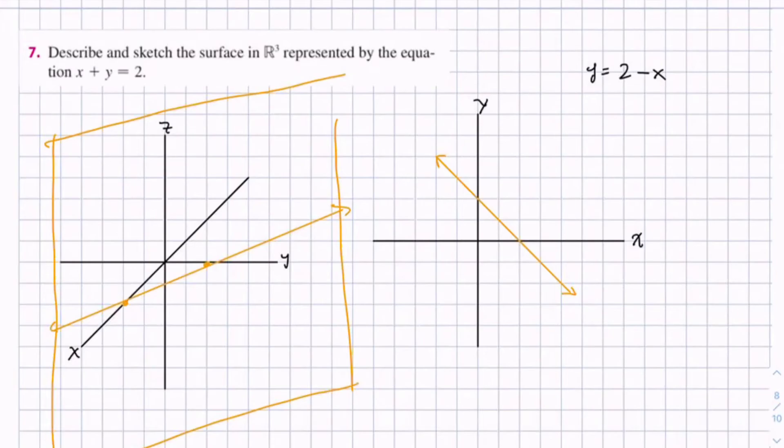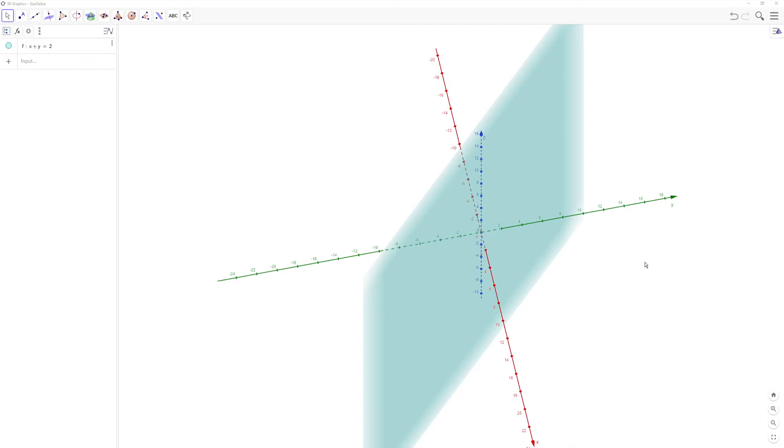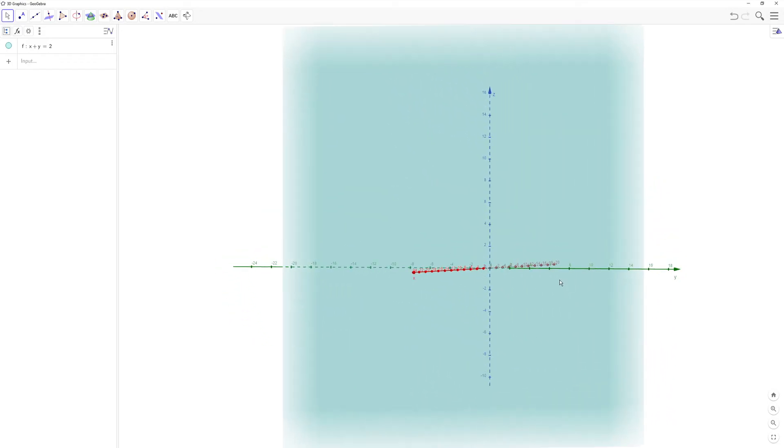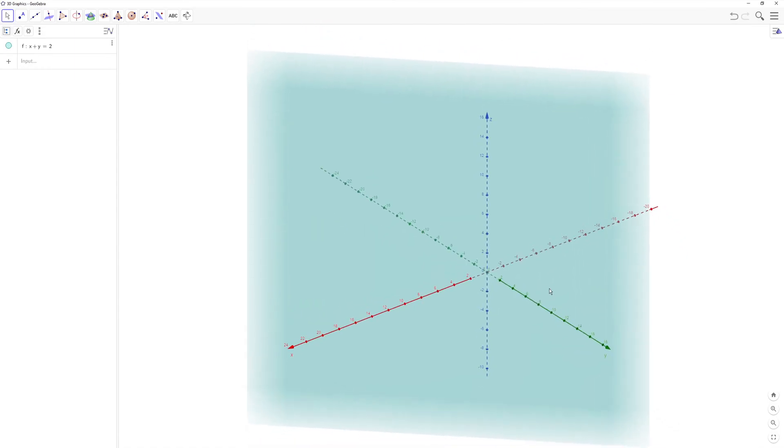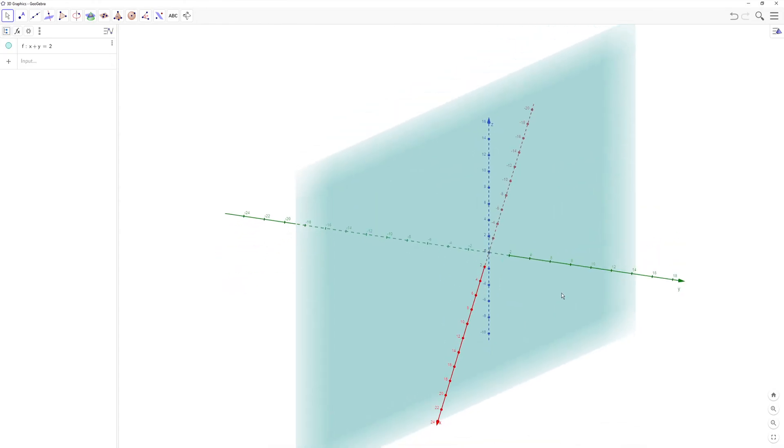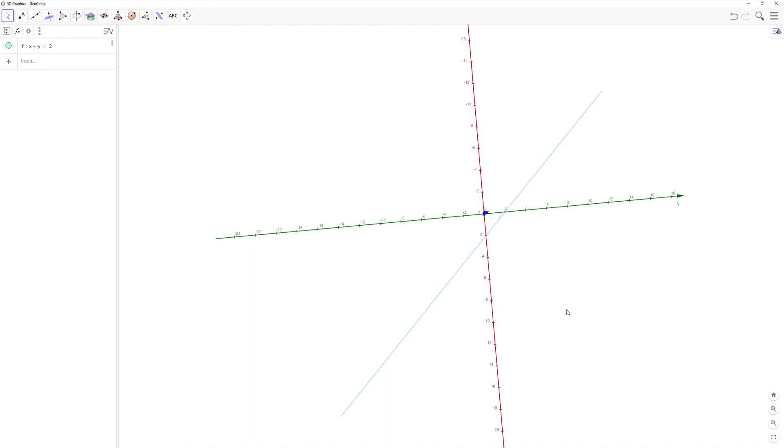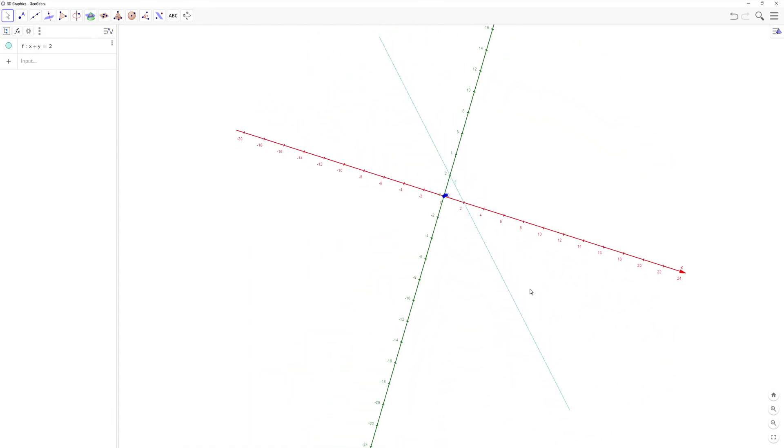And it's easier to see in a computer graph, so let me show you guys. As you can see, we have the plane. We have our x, y axis. And if we look down on the x, y plane, you can see the line we had, which is this.